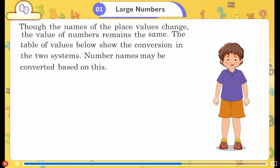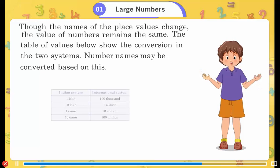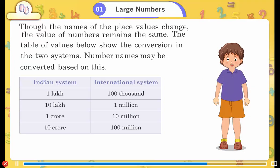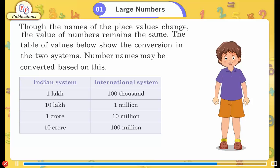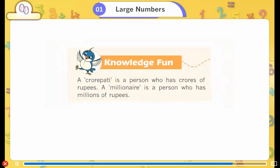The table below shows conversion between the two systems: 1 lakh (Indian) = 100 thousand (International); 10 lakh = 1 million; 1 crore = 10 million; 10 crore = 100 million. Knowledge fund: A crorepati is a person who has crores of rupees. A millionaire is a person who has millions of dollars or rupees.